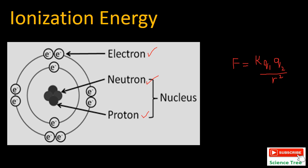Have you ever thought about why all these particles are closer to each other and why they do not move away? Because there are forces of attraction present between them. Two types of forces are present in atoms: attractive forces and repulsive forces. Attractive forces are between opposite charges, while repulsive forces exist between same charges — like between electrons and electrons, or between protons and protons.